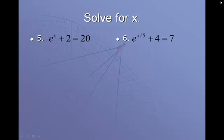On number 5, we're going to start by subtracting the 2 from 20 to get 18. And on this problem, we have an e, so to get rid of the e, we're going to use natural log to solve this. Natural log of 18 equals x. And when I evaluate natural log of 18 in my calculator, I get 2.89, and that equals x for my final answer.